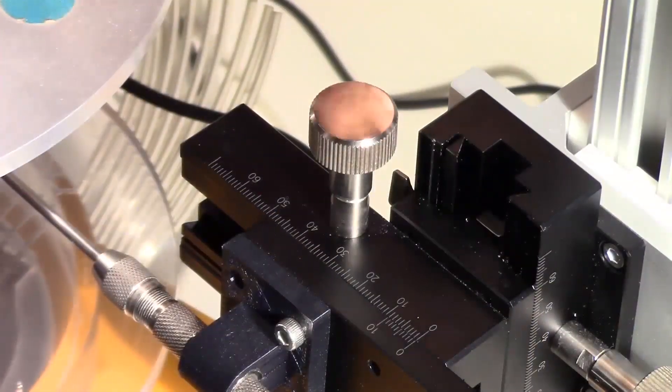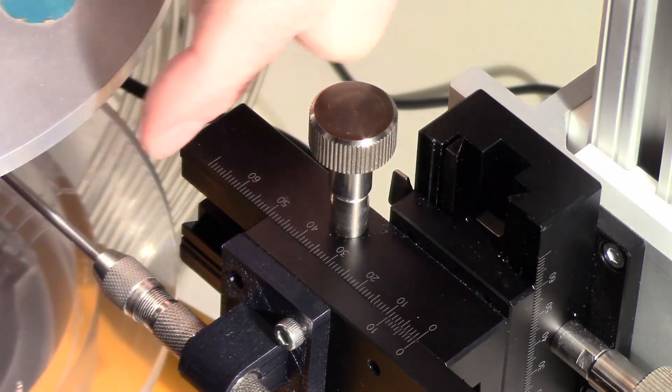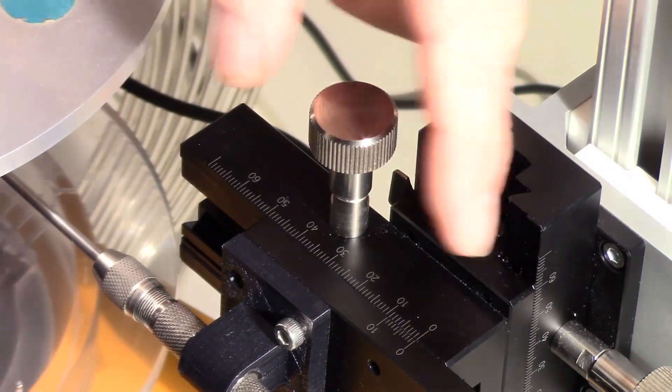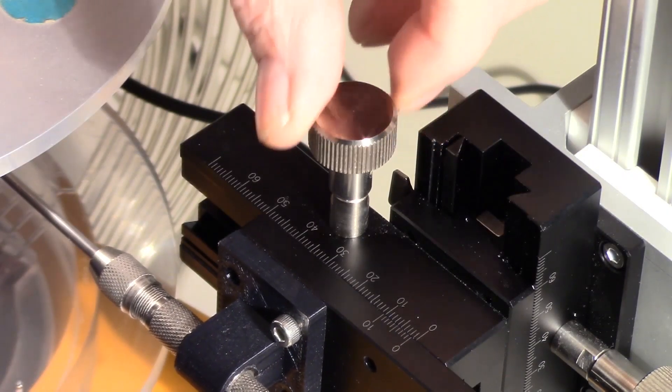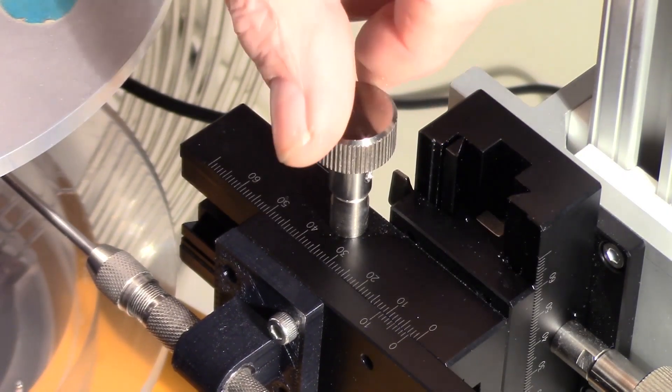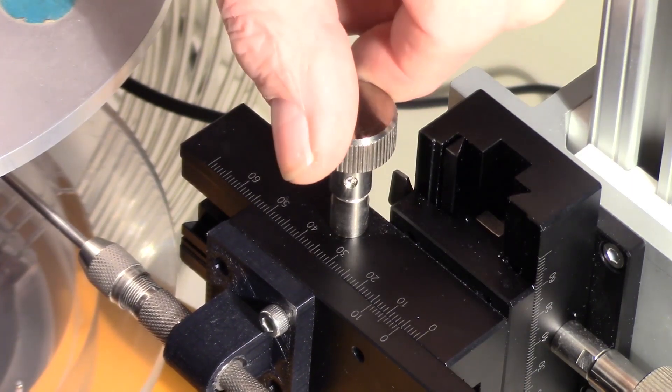Here's a close-up of the horizontal stage we'll be using to traverse our pitot tube across the jet. You can see we have a scale up here and we can manipulate this very precisely in one millimeter increments as we traverse across the jet and take measurements.